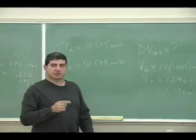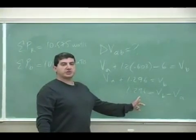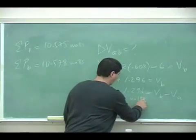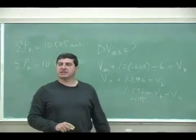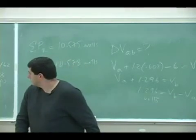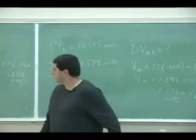So the voltmeter, if you put them across those two points, is going to read 1.296 volts. And the VB is going to be at a higher voltage. The one up there is going to be at a higher voltage.